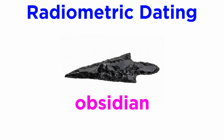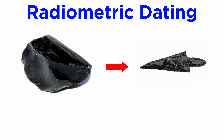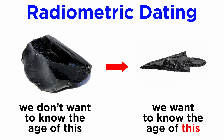Suppose we have an artifact — an obsidian spear point. Recall from the geology series that obsidian is an igneous rock, so radiometric dating could be used to estimate an age for the obsidian. This is the main problem: we don't want to know how old the obsidian is, we want to know when it was shaped by human hands. There is no method of radiometric dating to tell us when something was altered by humans, as opposed to when it was formed.